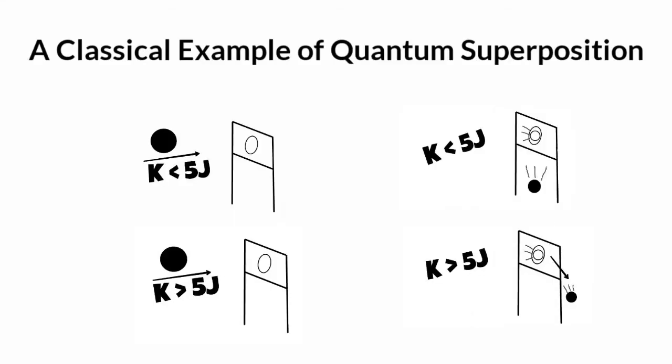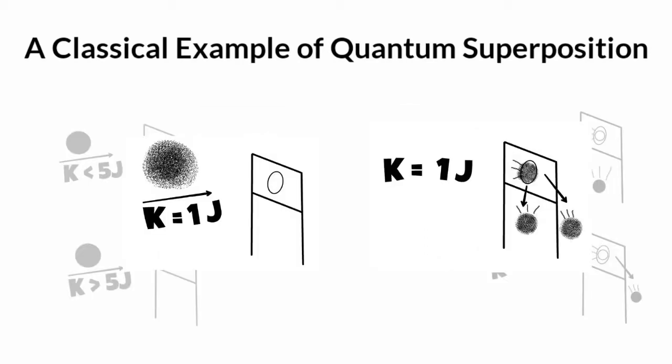By classical physics, the ball can't pass through the goal post because the kinetic energy isn't enough to surpass the potential energy. But according to quantum mechanics, every particle is not a point but is a wave, and finding it in a specific region at a specific time is defined by its probability wave function amplitude.